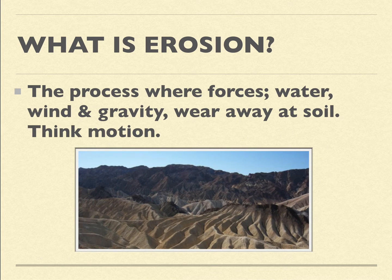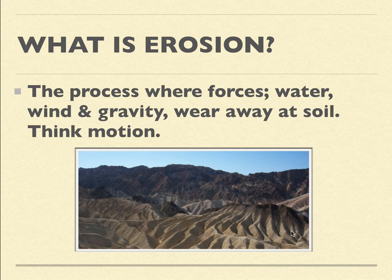What is erosion? Erosion is the actual motion. Here's a photo of Zabriskie Point in Death Valley — this is called the Badlands, meaning the land is bad and nothing grows there. Look at how rich these little canyons are that have been carved out from water.